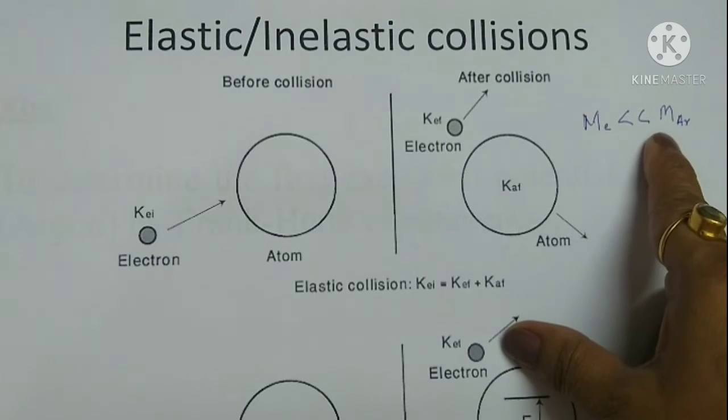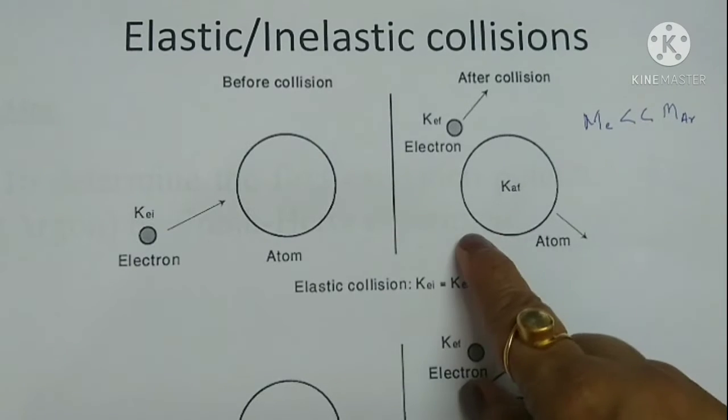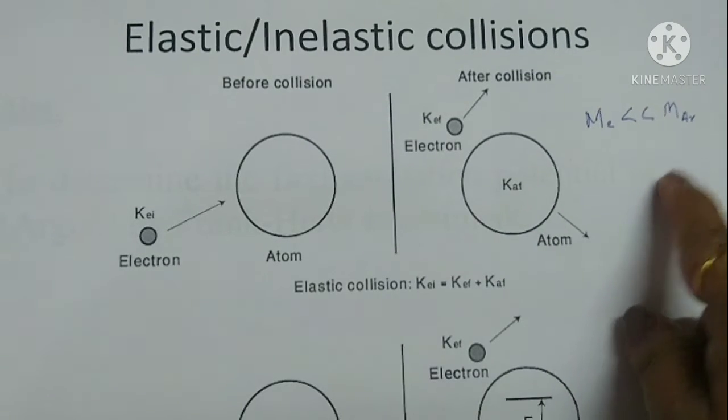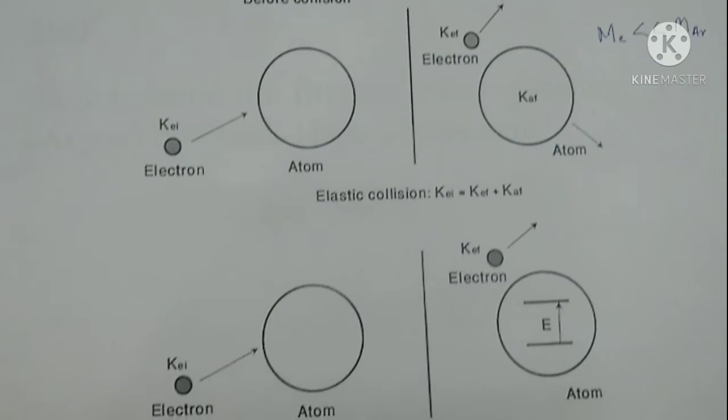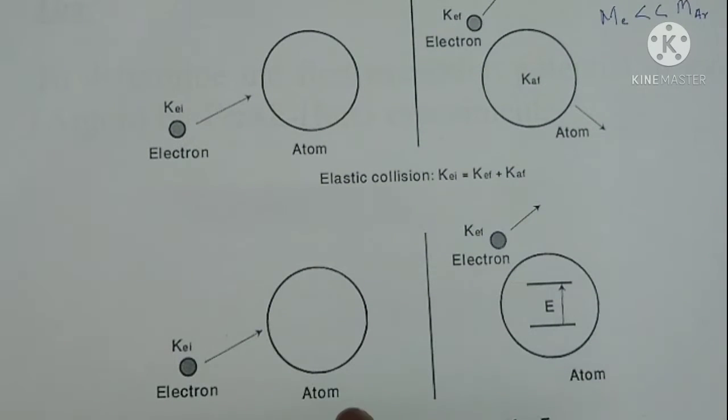Energy loss in the electron will be negligible as the mass of the electron is very much less than the mass of the argon atom. The electrons would pass through the anode and collector current increases with increase in accelerating voltage.